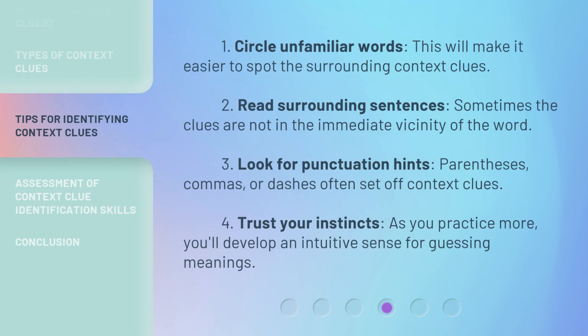Here are strategies to help identify context clues. 1. Circle unfamiliar words — this will make it easier to spot the surrounding context clues. 2. Read surrounding sentences — sometimes the clues are not in the immediate vicinity of the word. 3. Look for punctuation hints — parentheses, commas, or dashes often set off context clues. 4. Trust your instincts — as you practice more, you'll develop an intuitive sense for guessing meanings.